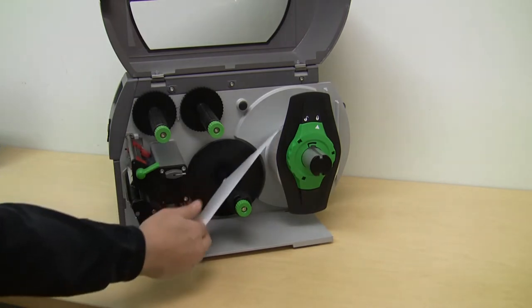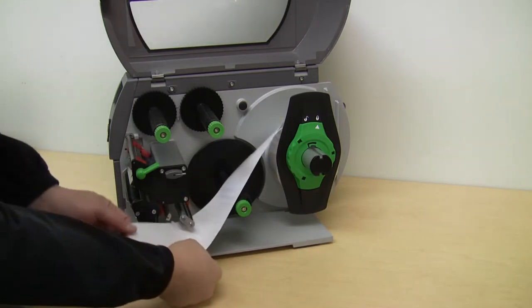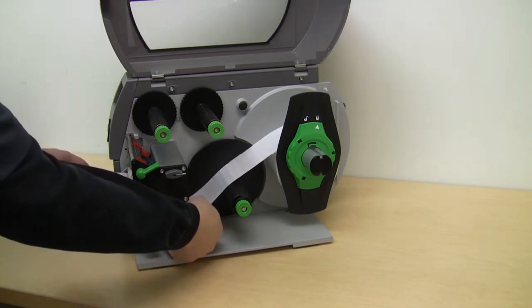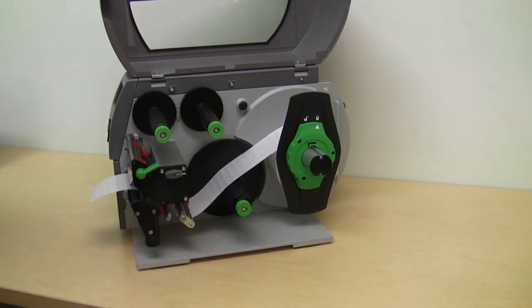The open side architecture allows us to bring the labels in from the side, underneath the lower guide roller, and underneath the print head.